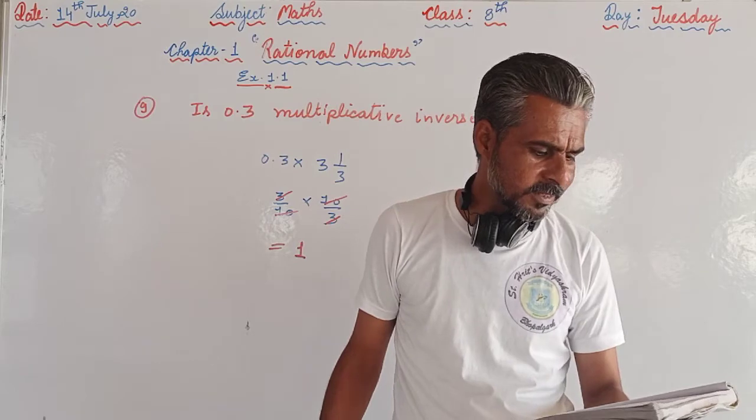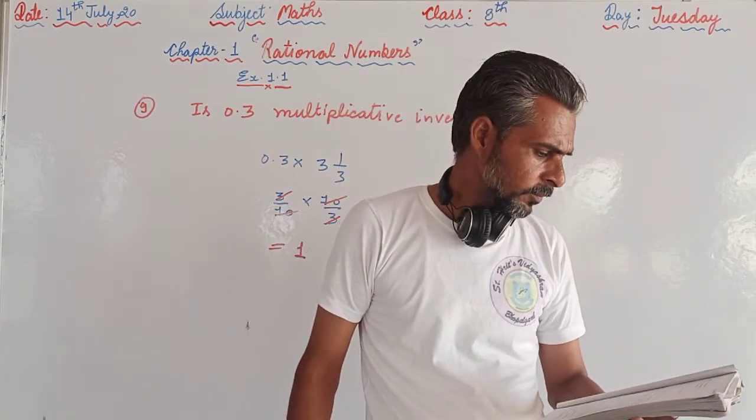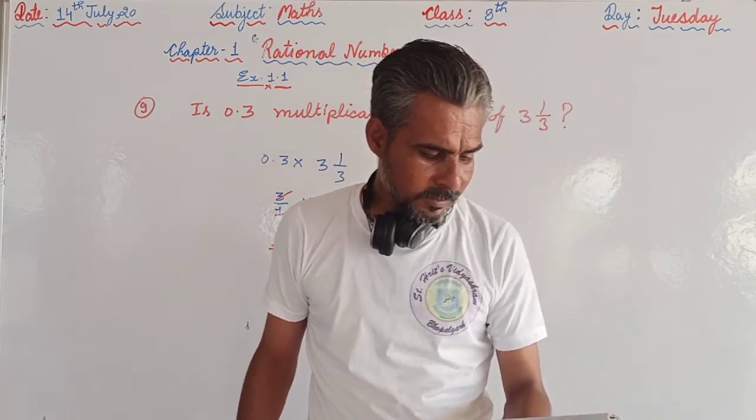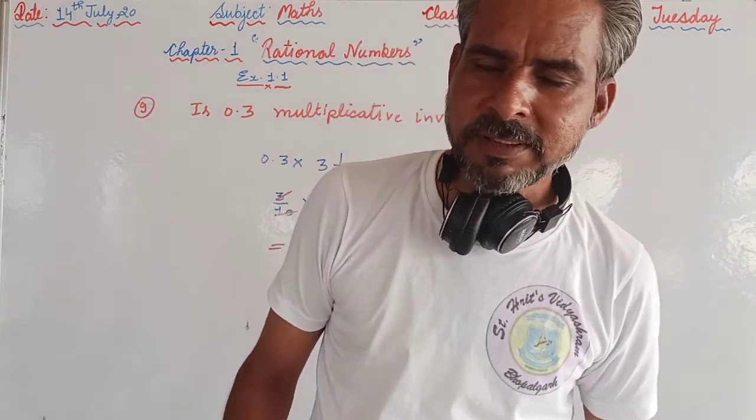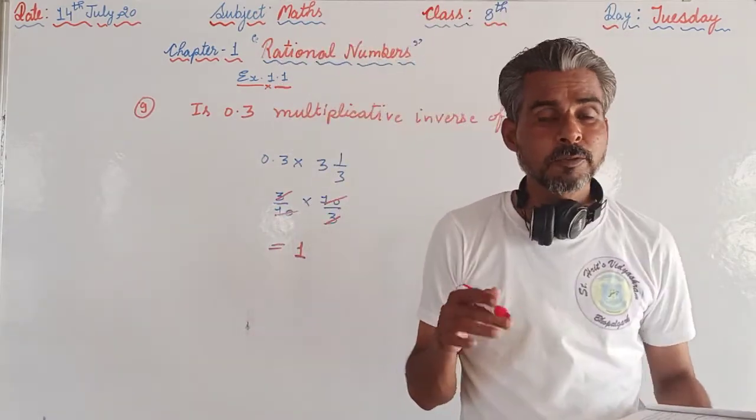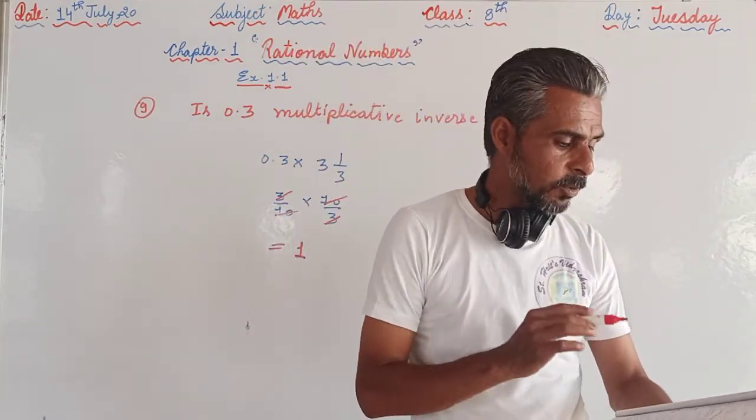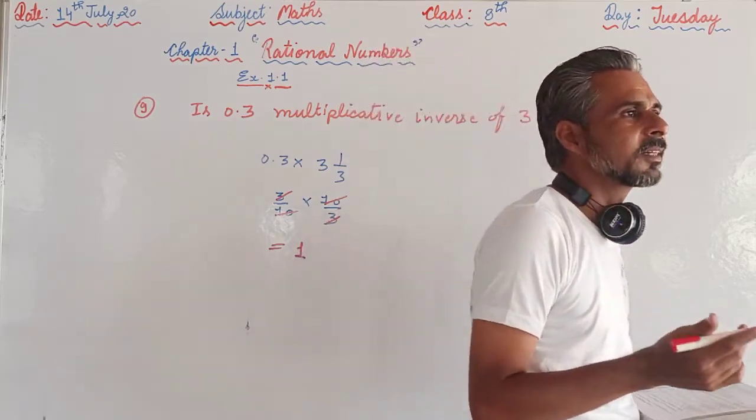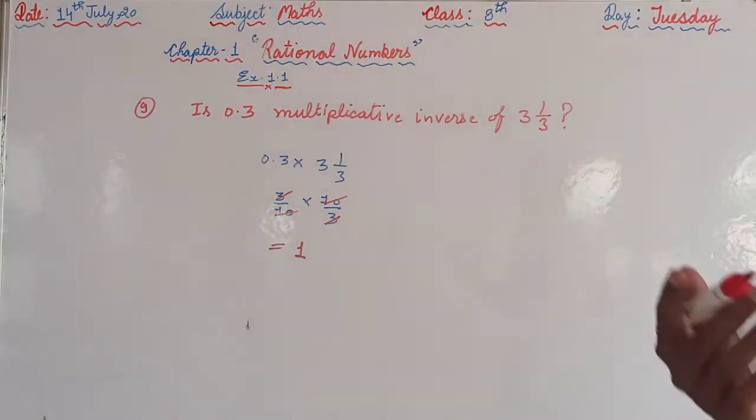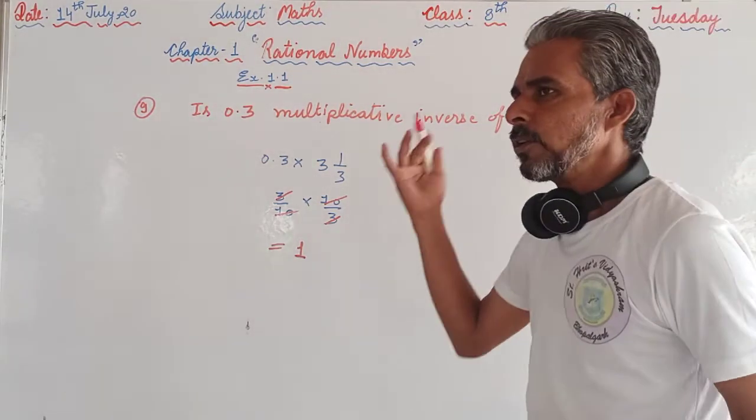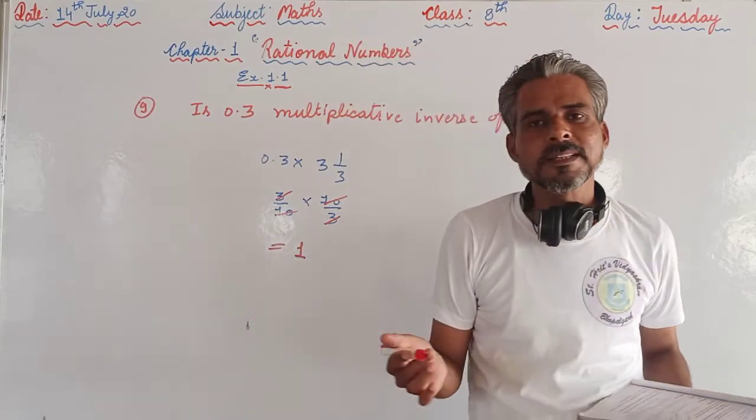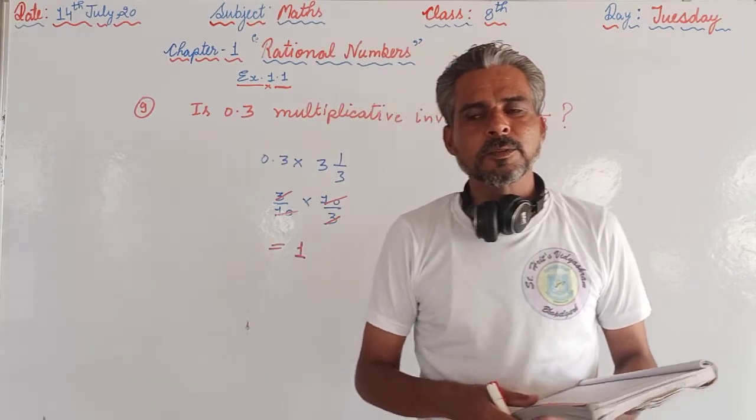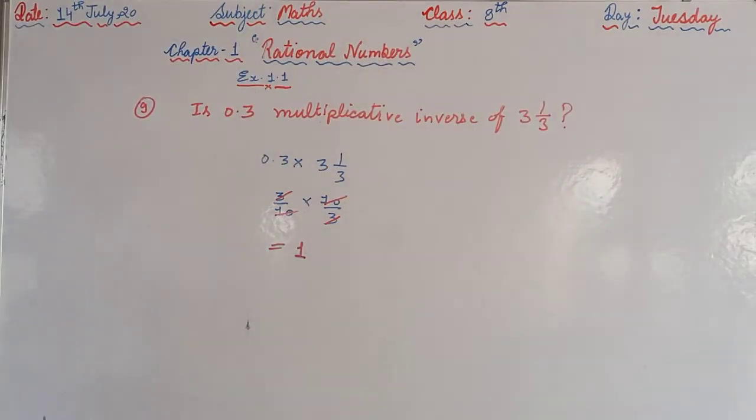The reciprocal of minus 5 is minus 1 upon 5. The reciprocal of 1 upon x, where x is not equals to 0, will be x. The product of two rational numbers is always a rational number. If two rational numbers are multiplied, then a rational number will result. The reciprocal of a positive rational number is always positive, because in reciprocals or multiplicative inverse we don't change the sign, we change position of numerator and denominator, or we can say we interchange the position of p and q.